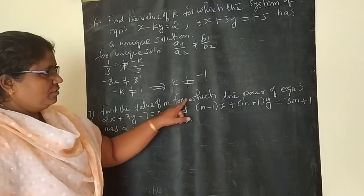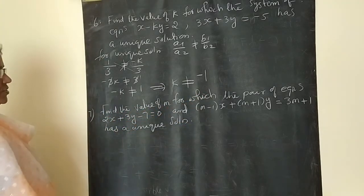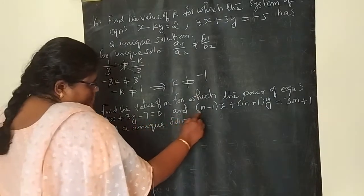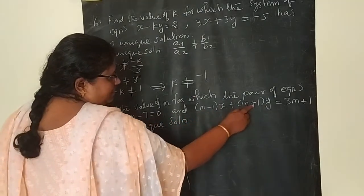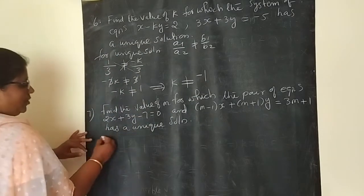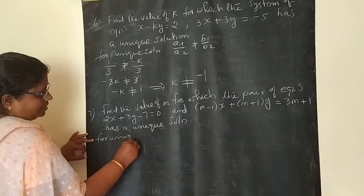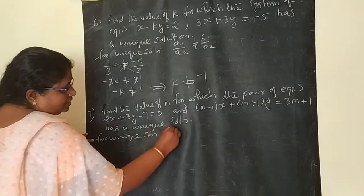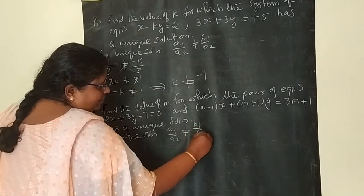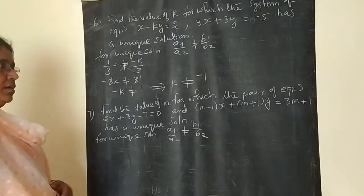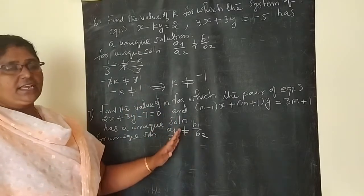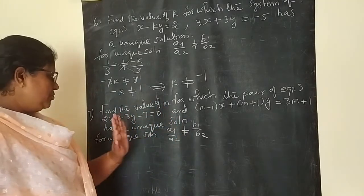Find the value of M for which the pair of equations 2X plus 3Y minus 7 equals 0, and M minus 1 into X plus M plus 1 into Y equals 3M plus 1, has a unique solution. For unique solution, A1 by A2 not equal to B1 by B2. We only consider the first and second coefficients, not the constant term.